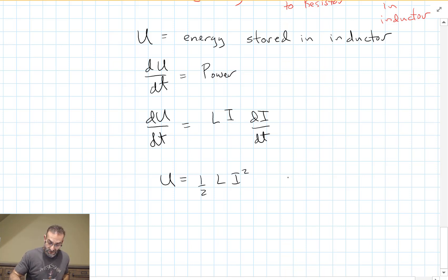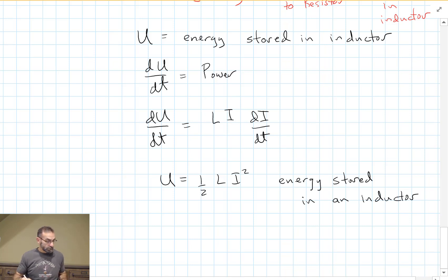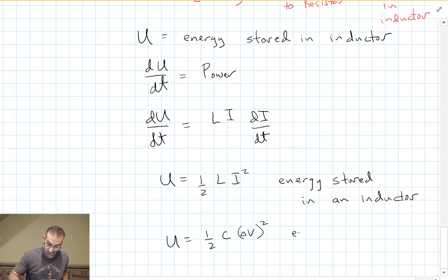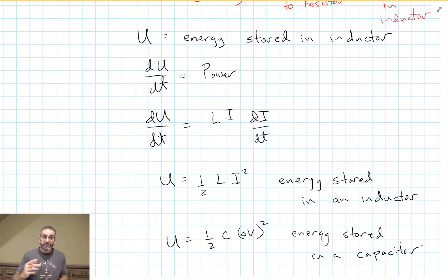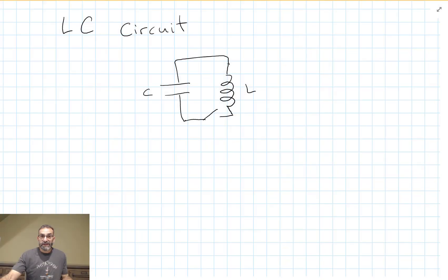That is the energy stored in an inductor — very similar to what we got for a capacitor. The capacitor stores energy in the electric field between the plates; the inductor stores energy in the magnetic field in the coil. Let's take a look at this special case where we have just an inductor and a capacitor in a circuit and nothing else.